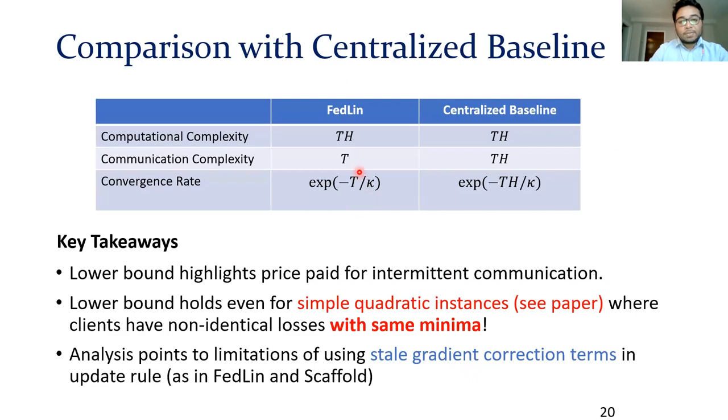With these bounds, we can compare FedLIN with a centralized baseline. Although both FedLIN and centralized baseline have the same computational complexity, we can reduce communication by a factor of H. But the price paid for intermittent communication is that H does not show up in the exponent. The main takeaway is that this lower bound holds even for really simple quadratic instances where the clients have the same minimum. These are the mildest forms of heterogeneity that you can hope for, and even then we can run into issues.